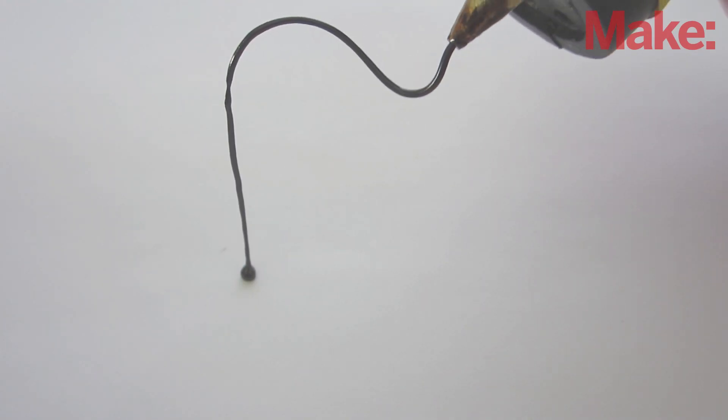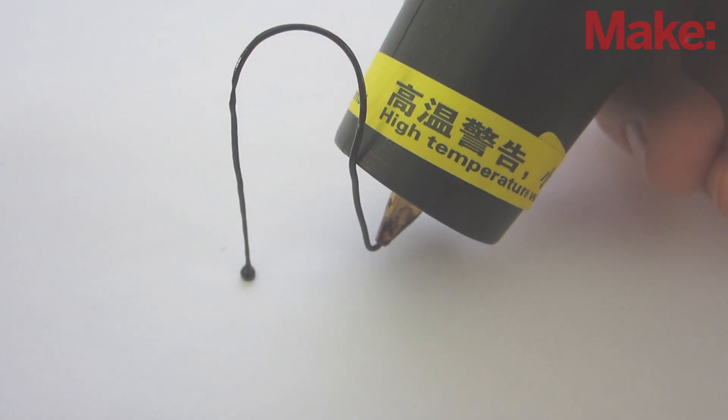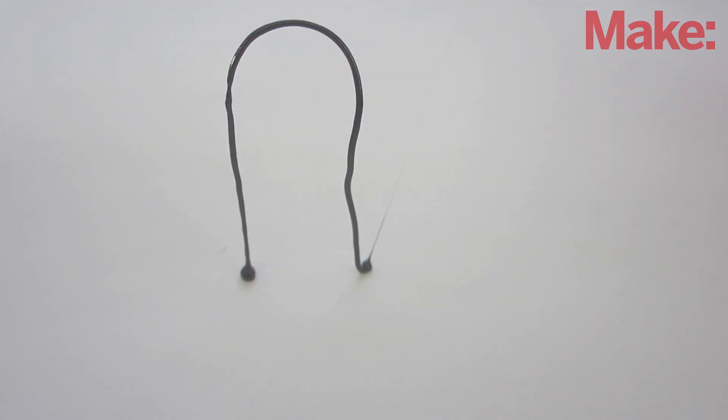To make curved lines, you need to move the plastic around as it's cooling. This can be pretty difficult, and it takes a lot of practice to get the timing right. So don't be discouraged if your first sketches aren't perfect.